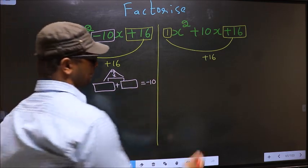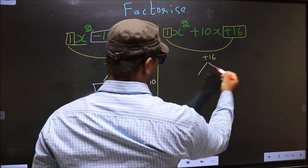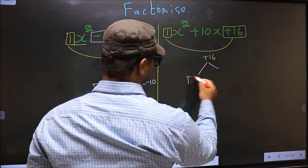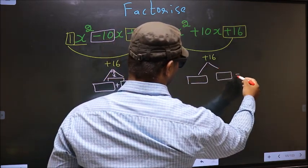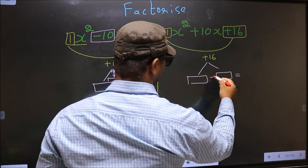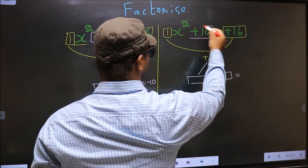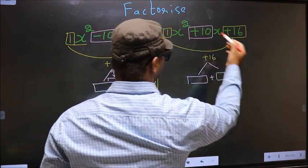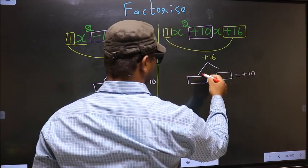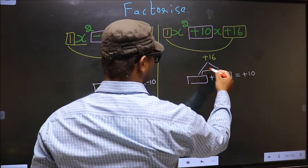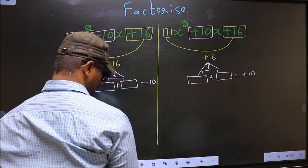Here also, look out for two numbers such that when you add them you should get the middle coefficient, that is plus 10, and also when multiplied you should get plus 16.